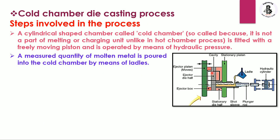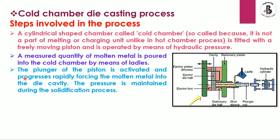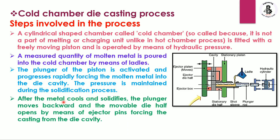The required amount of material is poured into the ladle, which ensures a sound casting. The plunger of the piston is then activated, rapidly forcing the molten metal into the die cavity. Pressure is maintained during the solidification process. After the metal cools and solidifies, the plunger moves backward and the movable die half opens, with ejector pins forcing the casting out from the die cavity.